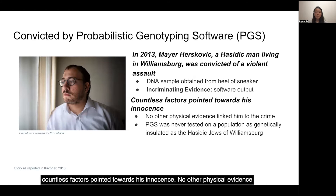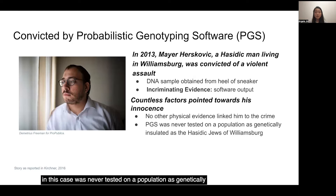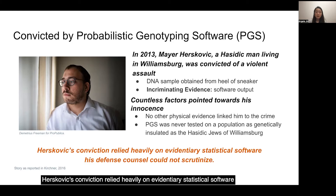However, countless factors pointed towards his innocence. No other physical evidence linked him to the crime, and alarmingly, the PGS tool used in this case was never tested on a population as genetically insulated as the Hasidic Jews of Williamsburg. In summary, Herskovich's conviction relied heavily on evidentiary statistical software his defense counsel could not scrutinize.